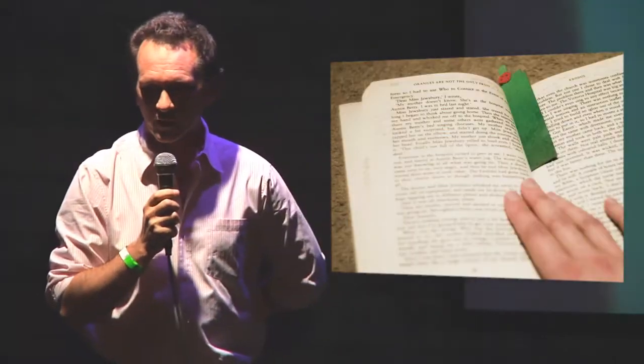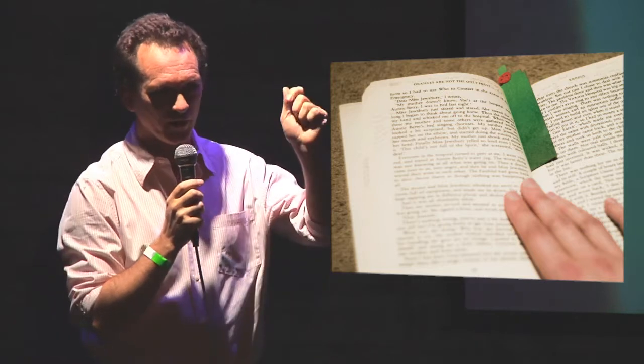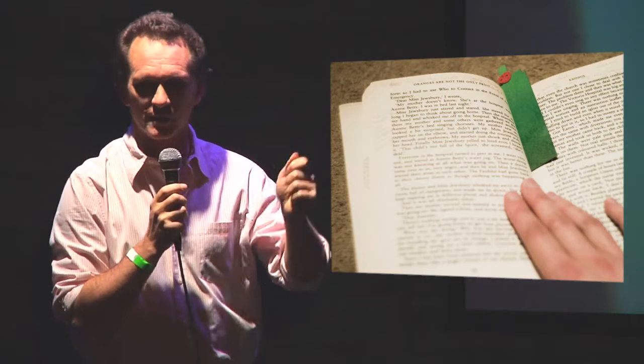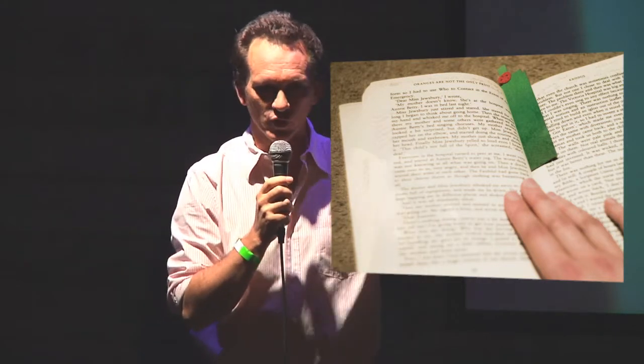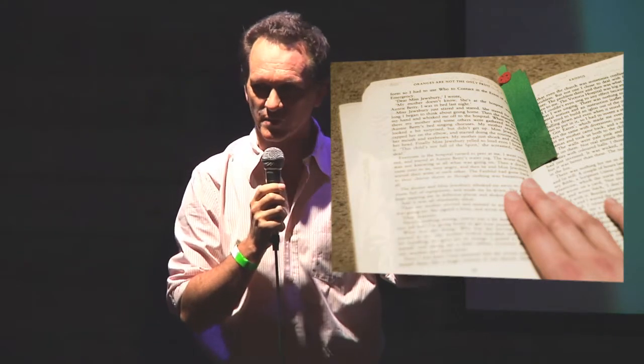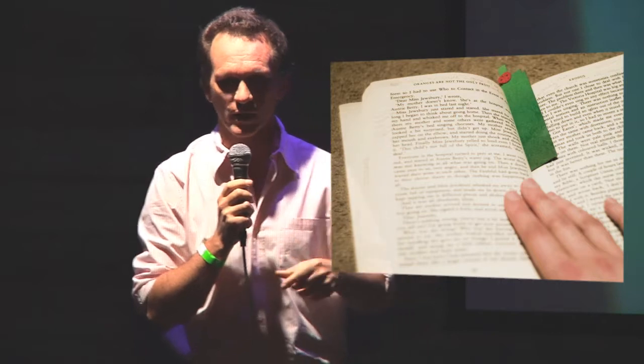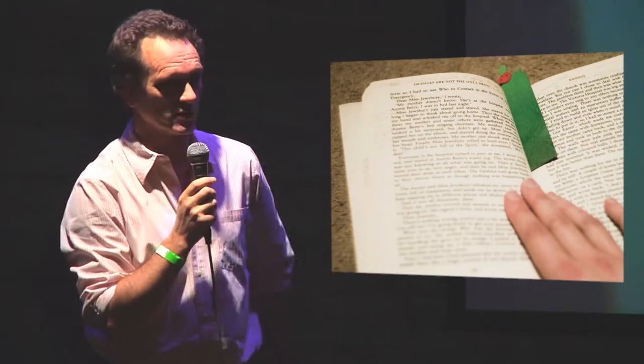When we read a book, you take a bookmark and you put the bookmark into the book. Why do you stick it in the book or fold the page over? Why is the information in the book? Why don't you put it somewhere else?